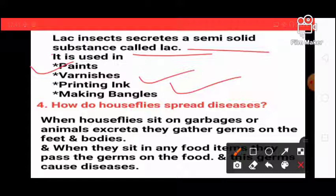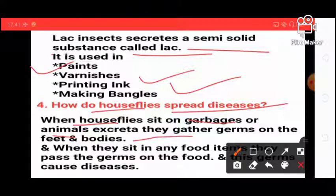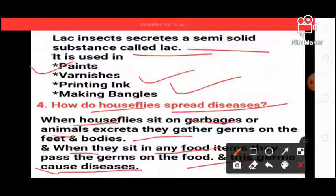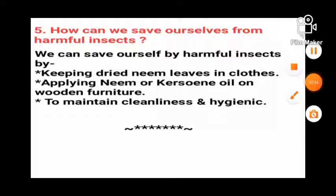How do houseflies spread diseases? When a housefly sits on garbage or animal excretion, germs gather on its feet and body. When it then sits on food items, these germs are passed onto the food, and these germs cause diseases.